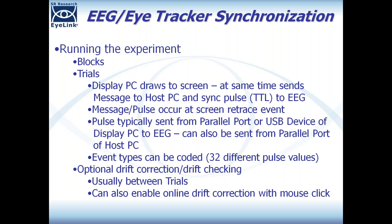If your display PC doesn't have a parallel port, you have two options. One is to use a special device that converts a USB signal to a TTL style pulse — Experiment Builder supports a device called a USB 1208 HS, which can be used on Mac or Windows. Another alternative is to send the pulse from the parallel port of the host PC. So the pulse can be done over the parallel port of the display PC, the host PC, or via the USB device on the display PC.